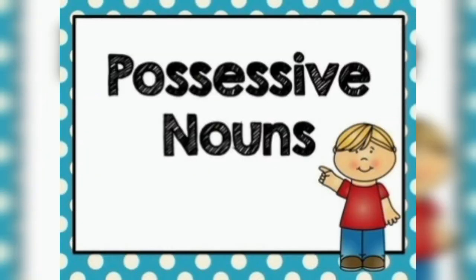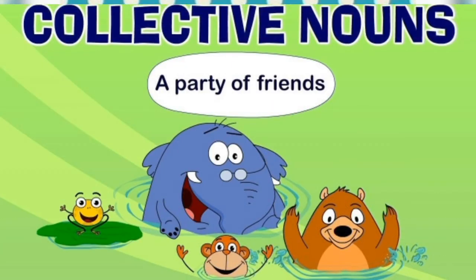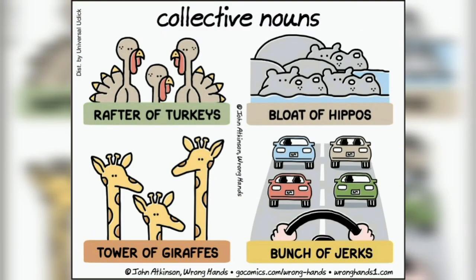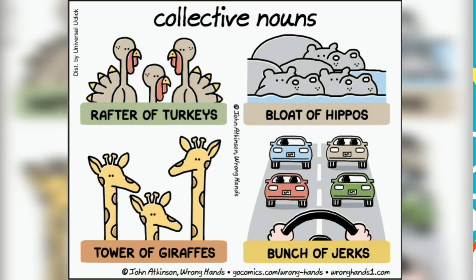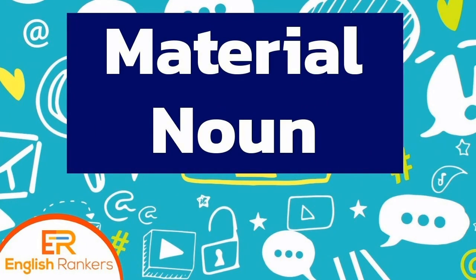Possessive nouns: show ownership or possession. Collective noun: a number of persons or things taken together and spoken of as one whole. Material nouns: name of a thing made up of alloy.